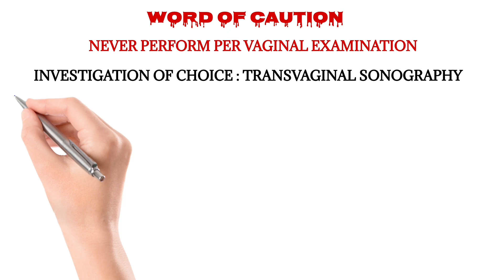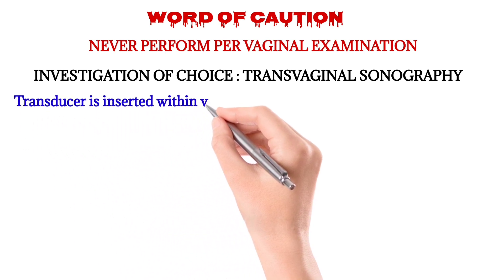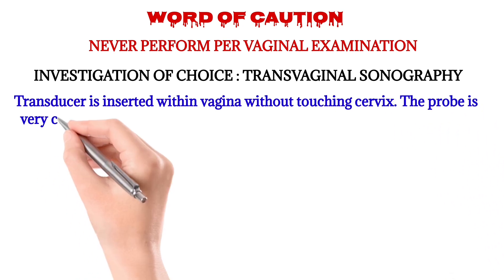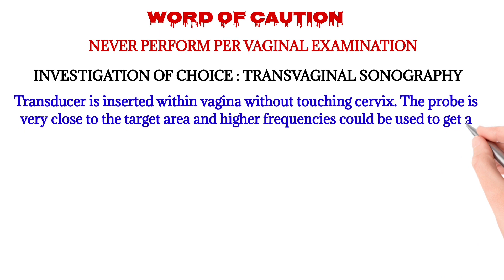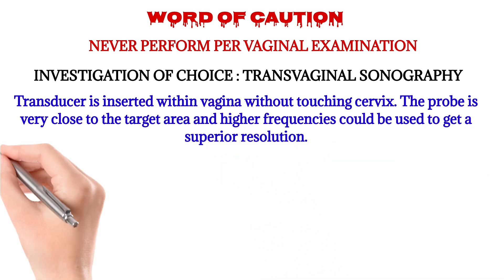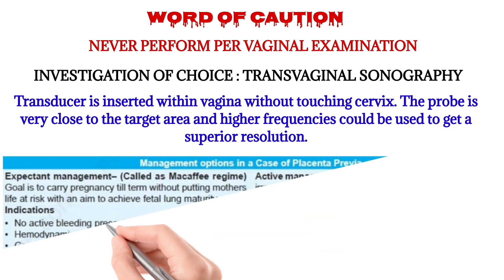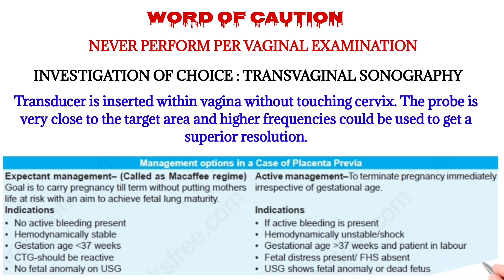The investigation of choice in placenta previa is transvaginal sonography. You may wonder — if we cannot perform a per-vaginal examination, how can we do transvaginal sonography? The key is that the probe is not taken beyond the internal os; it is kept very close to the target area without touching the cervix, and by using higher frequencies a very good resolution is obtained. This is why transvaginal sonography is preferred and safer than per-vaginal examination.